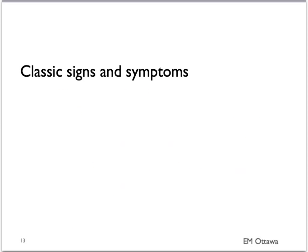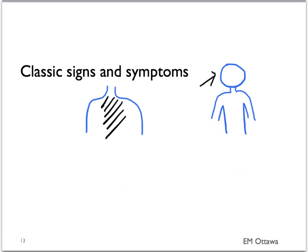For the sake of this module, what we'd like you to remember is the classic signs and symptoms of aortic dissection: the tearing severe back pain in conjunction with other signs such as CVA, tamponade, ischemic gut, or ischemic limbs.